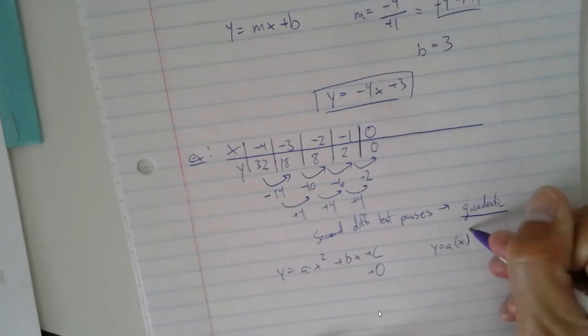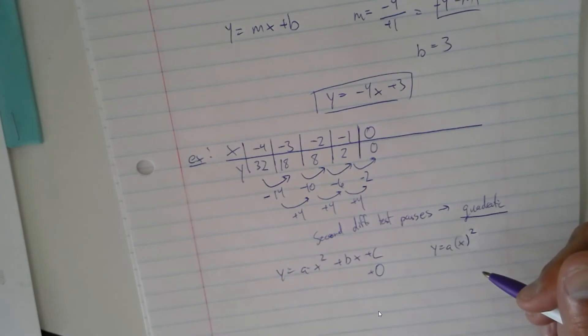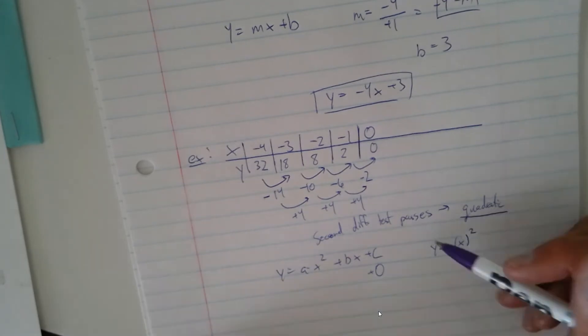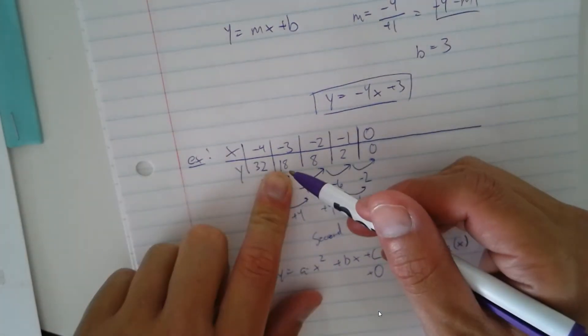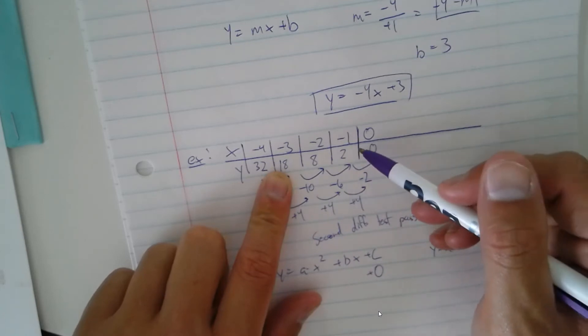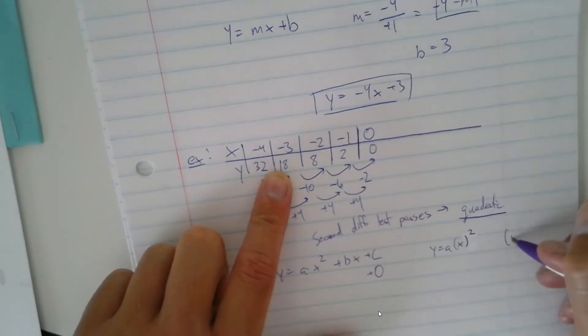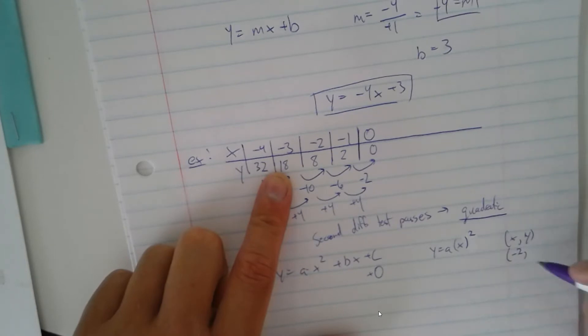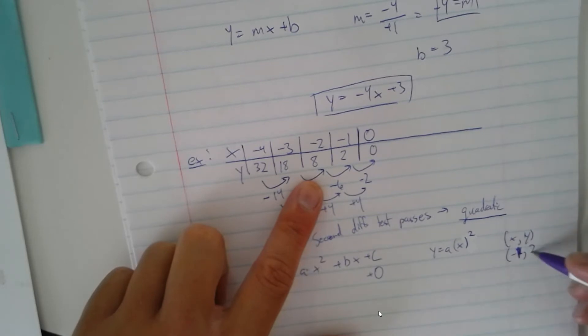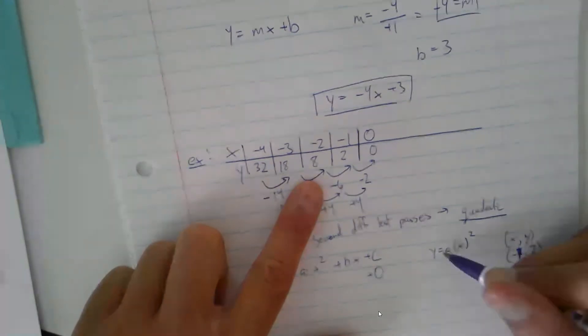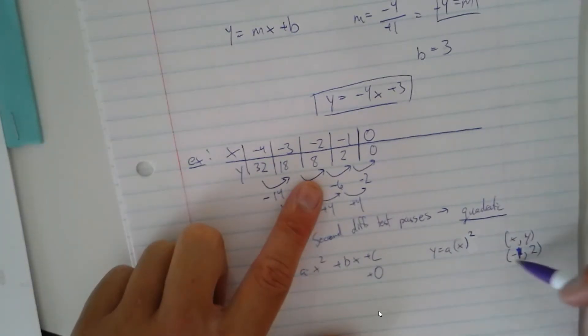To solve what a is going to be, you're going to take any point on here that's already written. So I'm going to take the xy coordinate of negative 1 comma 2. And we're going to plug this in here to find out a. So we're going to plug in any random point in here.